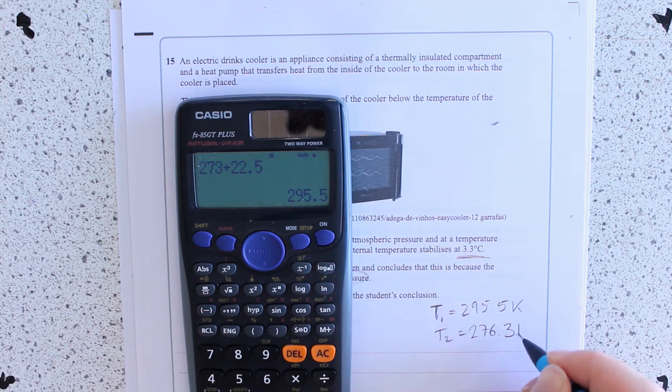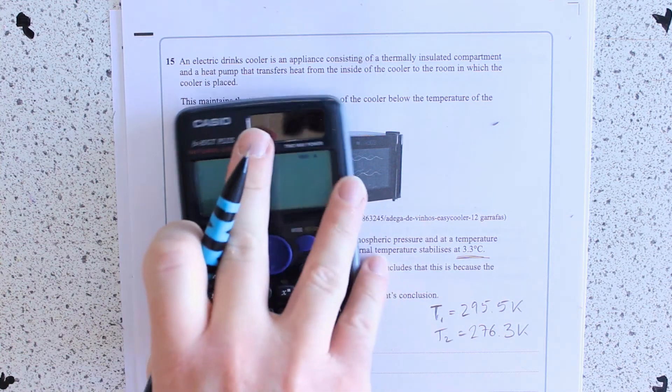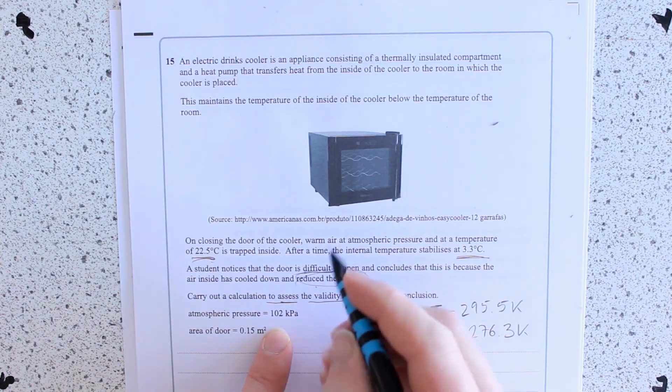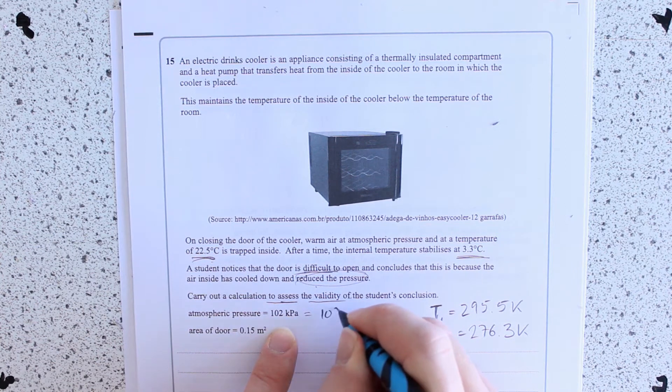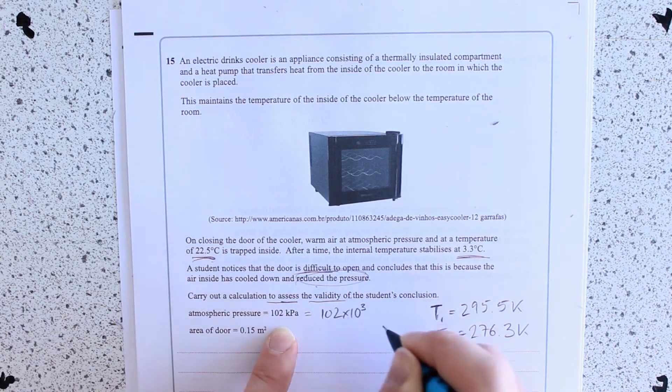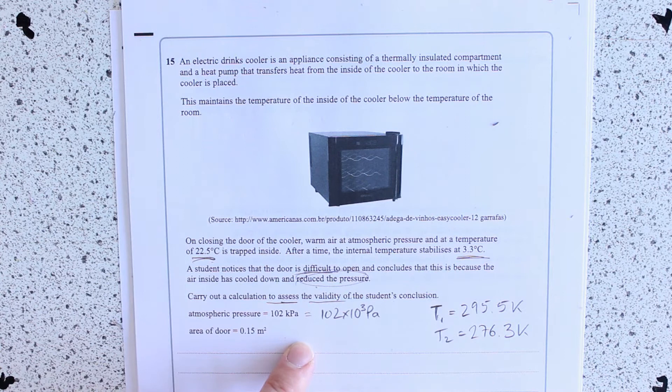And let's make this T2, 276.3. And let's convert this pressure to Y0, just so we don't make that sloppy error a little bit later on.